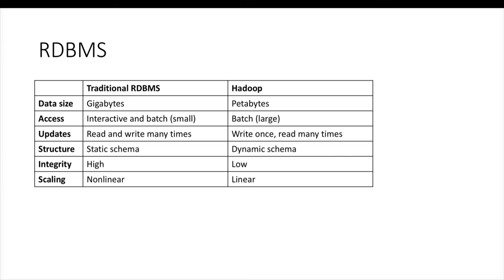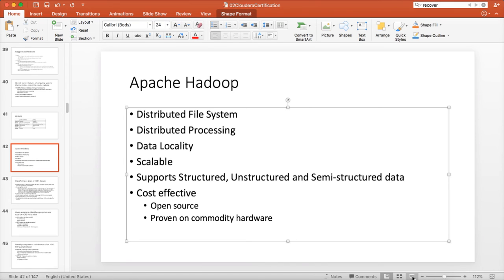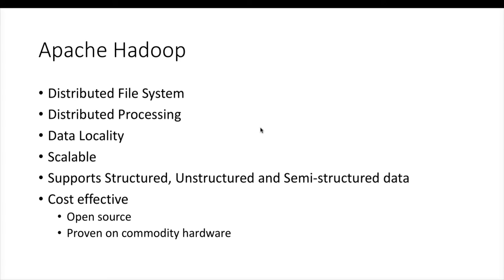The way Hadoop mitigates those limitations is by using these features: we have a distributed file system in Hadoop, and we have distributed processing. The processing happens leveraging data locality, which means the code will go to the data — that will be covered when we discuss MapReduce. In typical databases, data comes to the code, but in Hadoop, code goes to the data, which is called data locality. Hadoop is highly scalable and supports structured, unstructured, and semi-structured data.